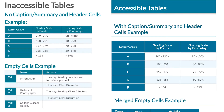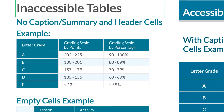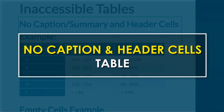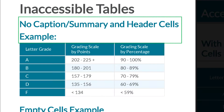The first example is called 'no caption, summary, and header cells.' This table does not have a caption and it doesn't have any headers. The cool thing about having headers is that when you're using a screen reader and navigating with the arrow keys, it will detect those column headers and read them.